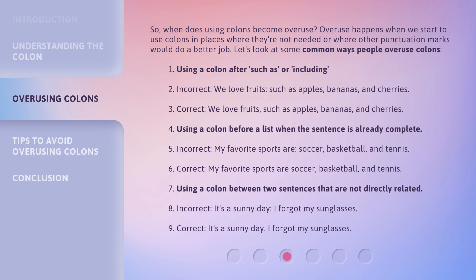First, using a colon after 'such as' or 'including.' Incorrect: 'We love fruits, such as: apples, bananas, and cherries.' Correct: 'We love fruits, such as apples, bananas, and cherries.' Second, using a colon before a list when the sentence is already complete. Incorrect: 'My favorite sports are: soccer, basketball, and tennis.'